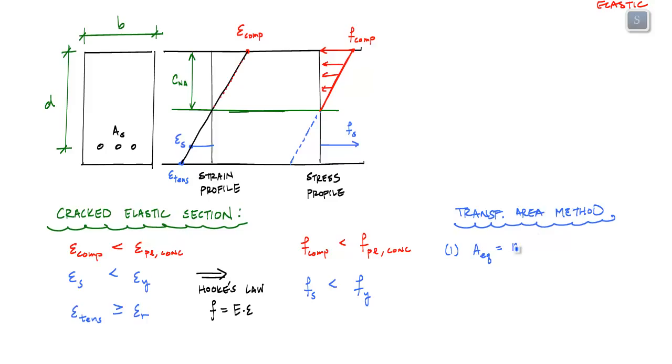The first thing you have to do is multiply by the modular ratio n, which is Es over Ec times As, where Es is the modulus of elasticity of steel and Ec is the modulus of elasticity of concrete. This relationship, A_equivalent equals Es over Ec times As, comes from force equilibrium, which we'll show later when we compare these two methods.